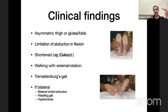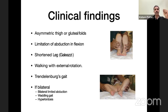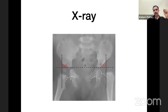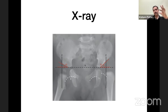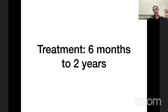For children more than 14 weeks old, clinical findings include asymmetric thigh or gluteal folds, limitation of abduction in flexion, shortened leg — called the Galeazzi sign. In a walking child there will be external rotation and Trendelenburg or waddling gait; if bilateral, there will be hyperlordosis and bilateral limited abduction. On X-ray, draw a horizontal line along the triradiate cartilage and a vertical line along the lateral border of the acetabulum — the head should lie inside and the acetabular index should be smaller, with an unbroken Shenton's line.